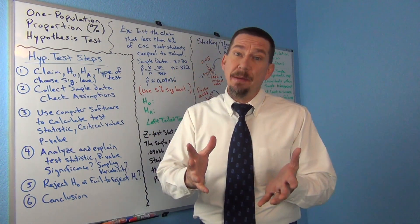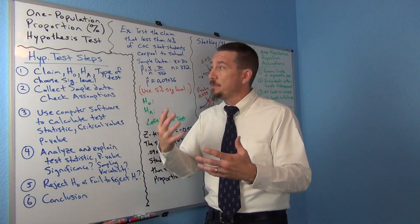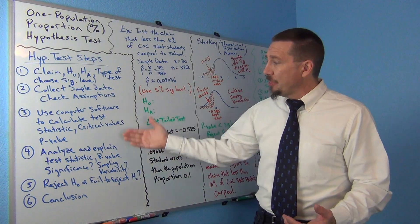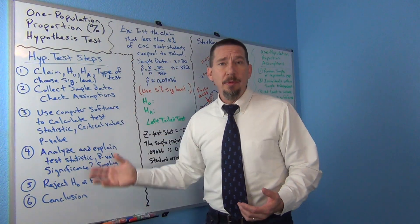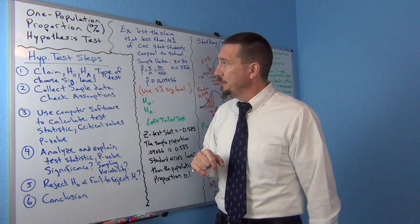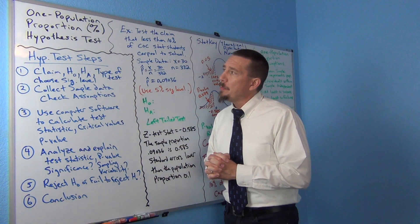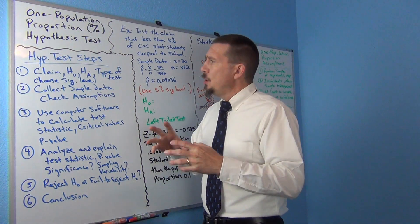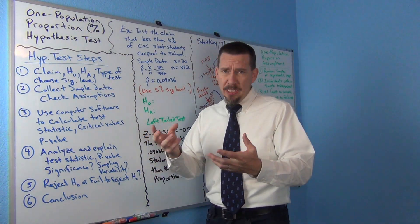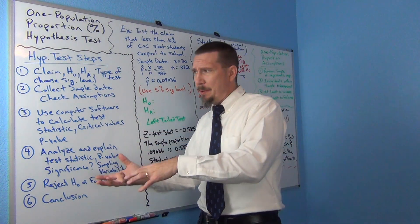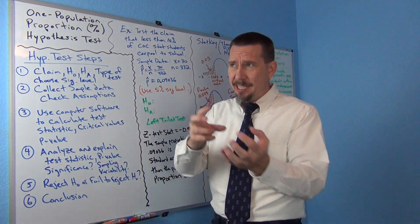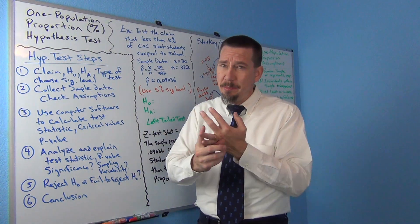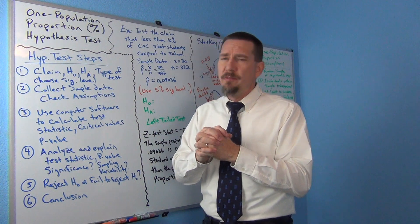Let's go through the steps for doing a hypothesis test. This is the first time we're really putting it all together, so we should go through the steps. When you do a hypothesis test, one of the first things you want to know is what type of test are you doing. Is it one population or two populations? Is it categorical data or quantitative data? Am I dealing with a proportion or a percentage, or am I dealing with a mean average?